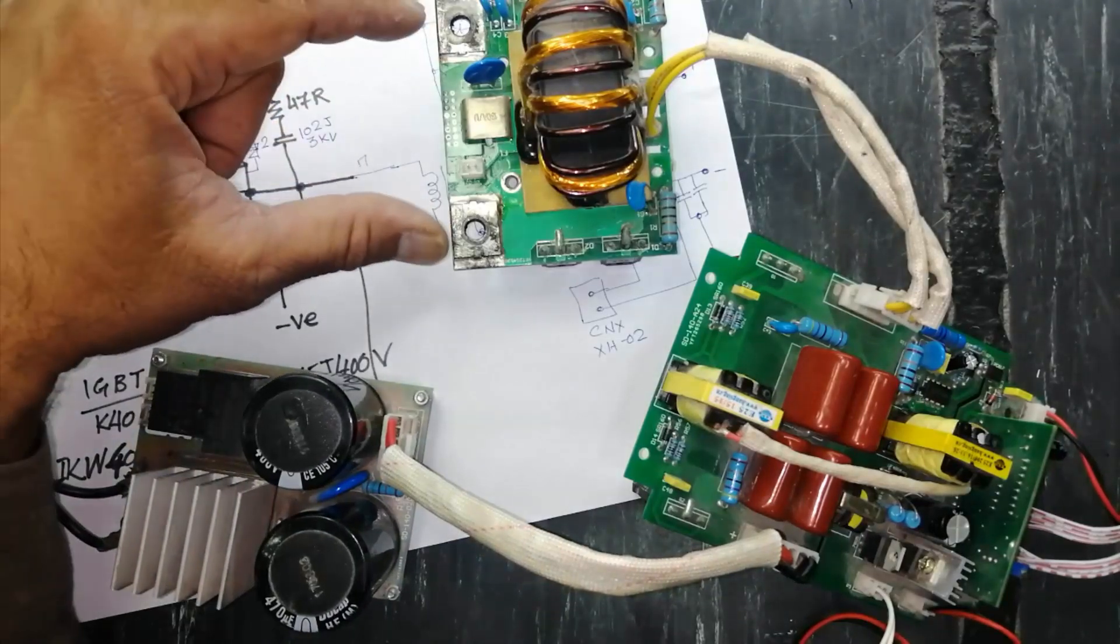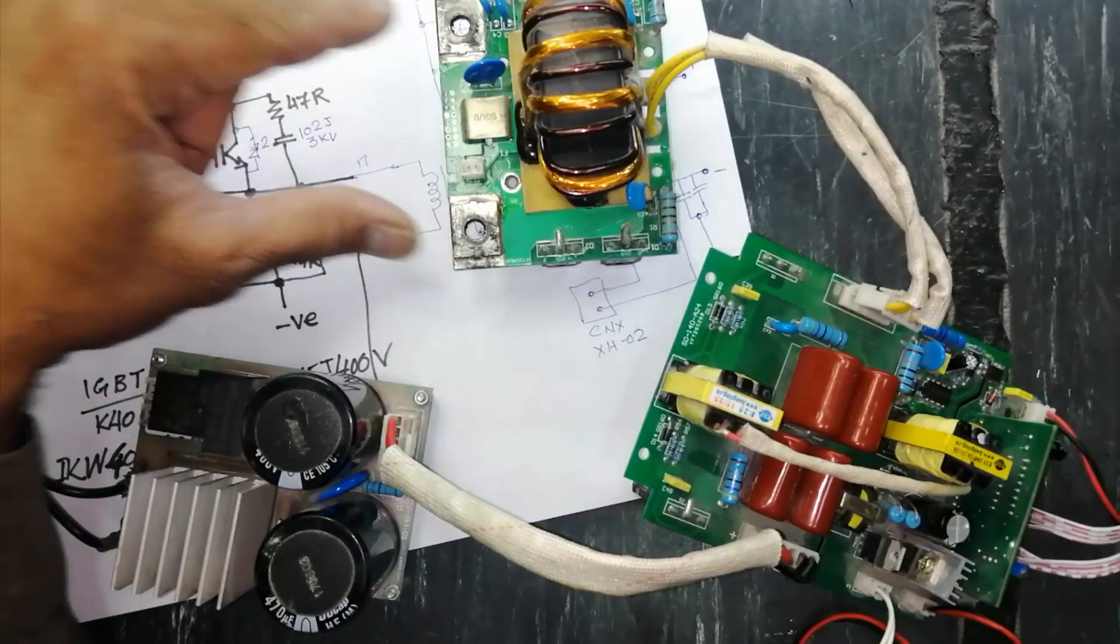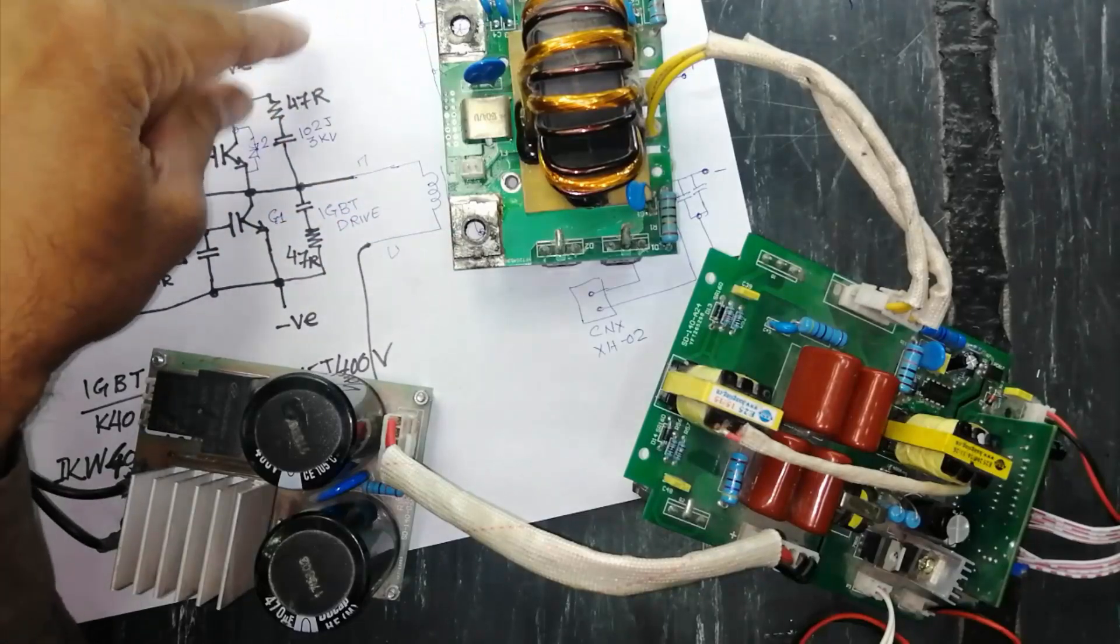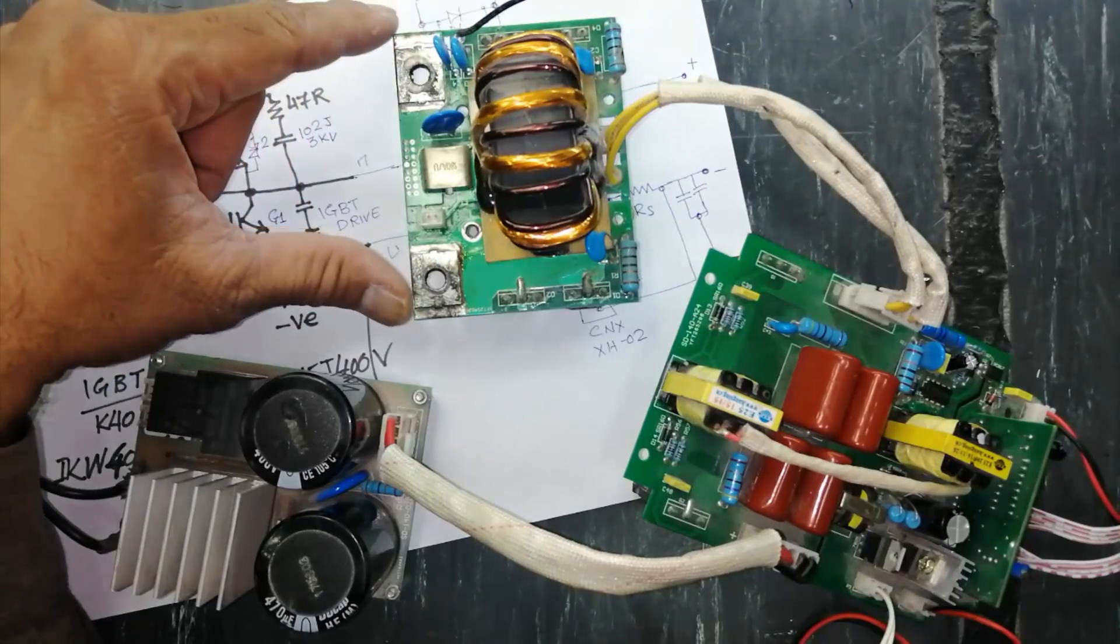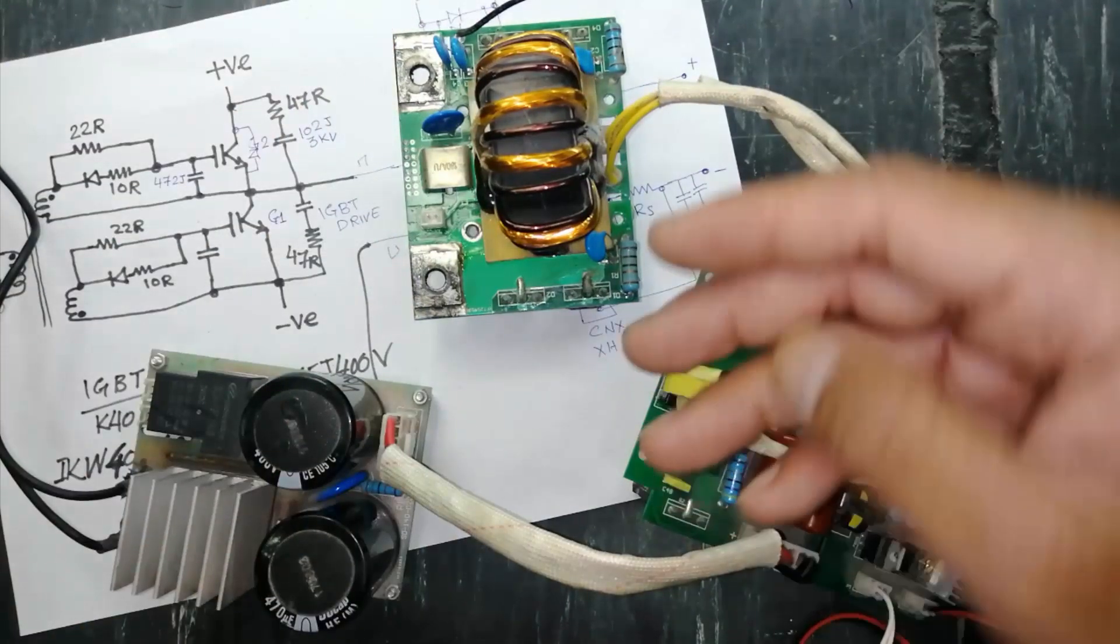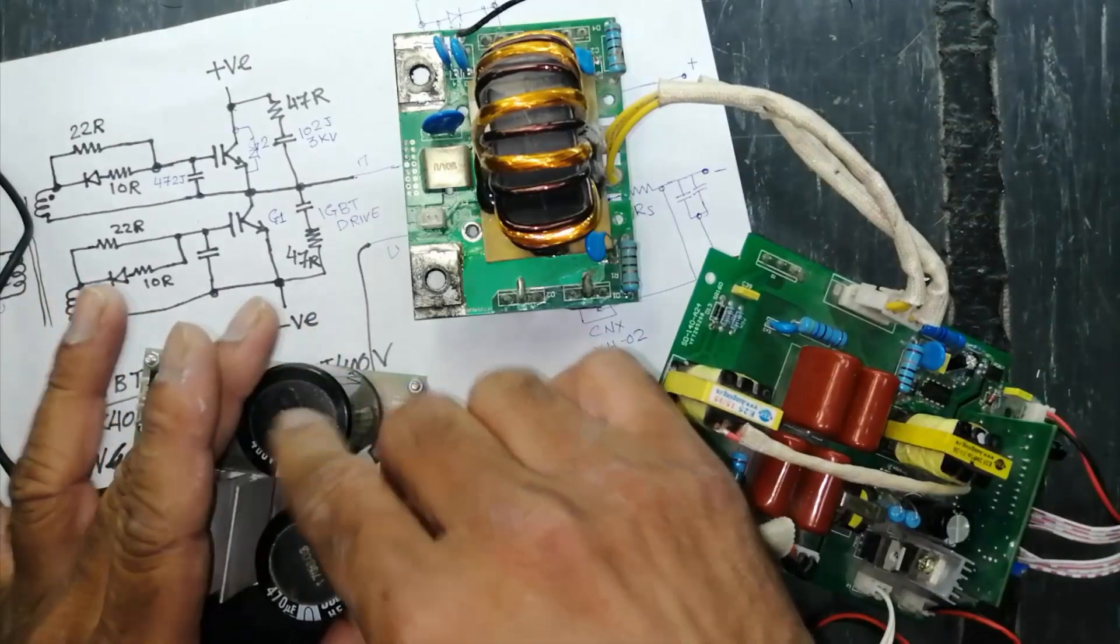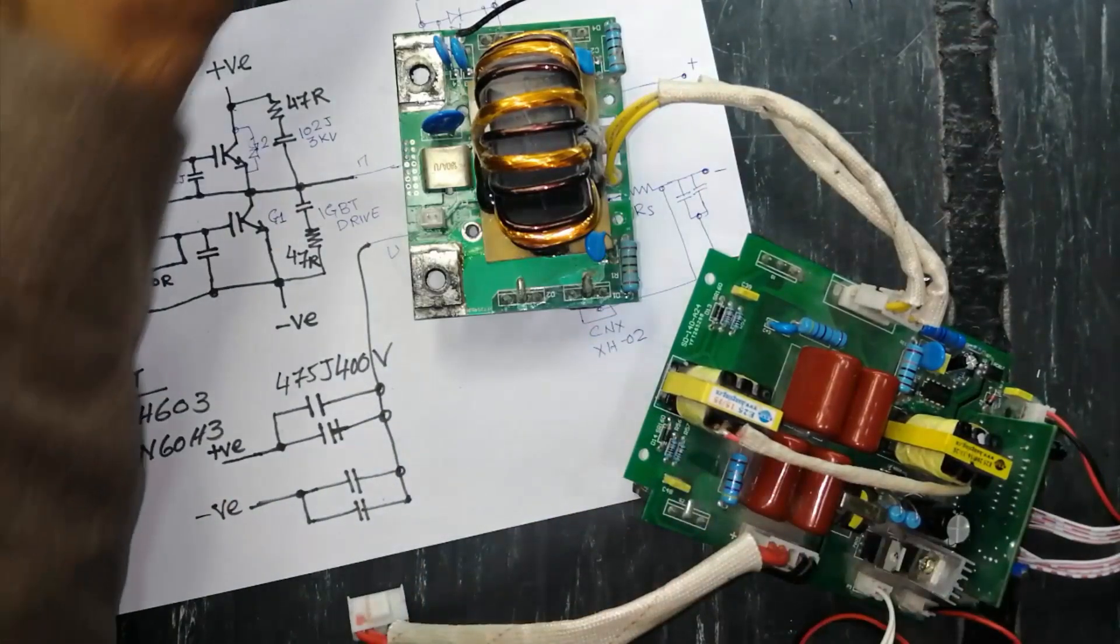The same as in mobile or in SMPS we use rectifiers, so here are the rectifiers. In mobile circuit we use output terminals to charge the mobile and here the output terminal is used to weld something. So the difference is the current, the voltage. That is the reason the design and the size is slightly different but the working phenomena is the same.